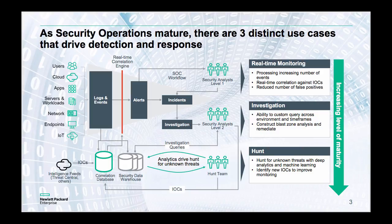Let's start with data coming in — logs and events from systems, applications, users, endpoints, and virtually any kind of system. We need to be collecting those and running them through what we call a real-time correlation engine. That's going to generate alerts and things that we need to investigate, which is when our analysts get their first level of interaction.